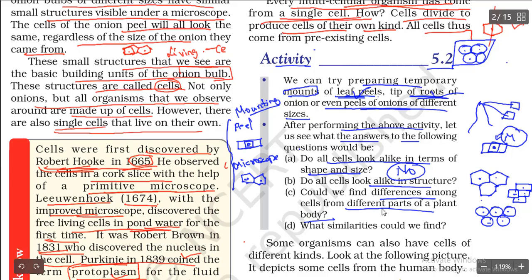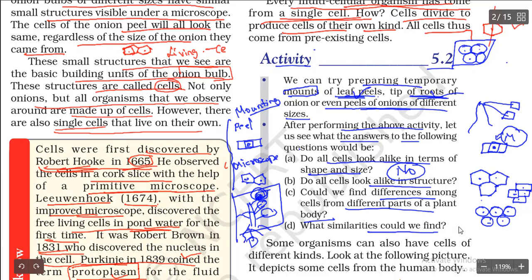Could we find differences among cells from different parts of the plant body? The plant body has branches, stem, leaves, roots, and fruit. The whole plant body does not have the same cells - leaf cells will be different, fruit cells will be different, stem cells will be different, and root cells will all be different. The only similarity is that cells are present in all parts of the plant body and each performs its particular activities.